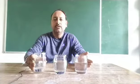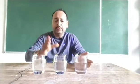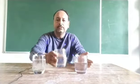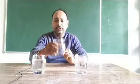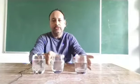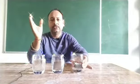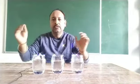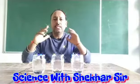So here I have three glasses. This one has normal tap water, this is chilled cold water, and this is hot water. So why is the intermixing fast?